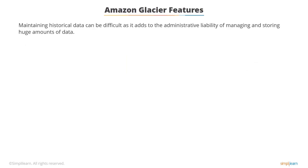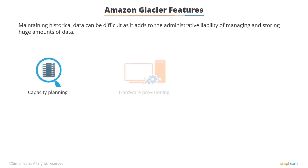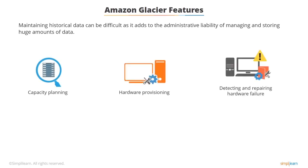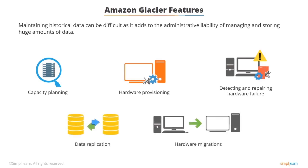Maintaining historical data can be a challenge, as it adds to the administrative liability of managing scaling storage. Amazon Glacier eases this hardship by providing features such as capacity planning, hardware provisioning, detecting and repairing hardware failure, data replication, and hardware migrations.